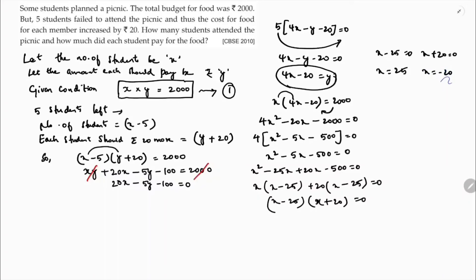So x = 25 or x = −20. Since the number of students cannot be negative, x = 25. They're asking how many students attended the picnic — since 5 did not attend, it's 25 − 5 = 20 students attended the picnic.